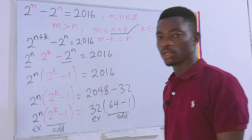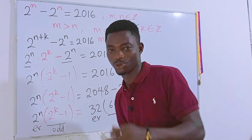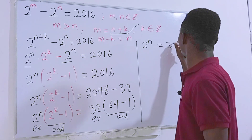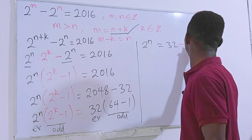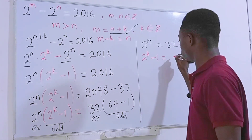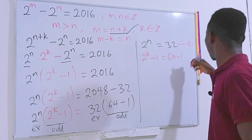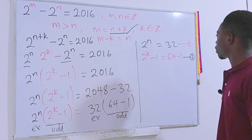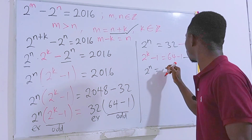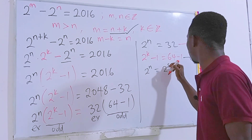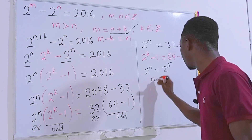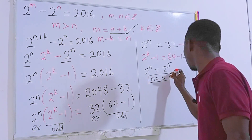We equate the even parts and the odd parts. From the even part: 2 to the power n equals 32. We can rewrite 32 as 2 to the power 5. The bases are the same, so n equals 5.